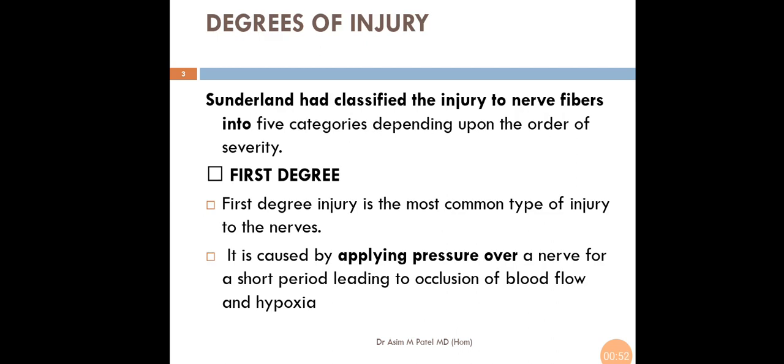Sunderland had classified the injury to nerve fiber into five categories depending upon the order of injury. They are called Degrees of Injuries: First Degree, Second Degree, Third Degree, Fourth Degree, and Fifth Degree of Injury.